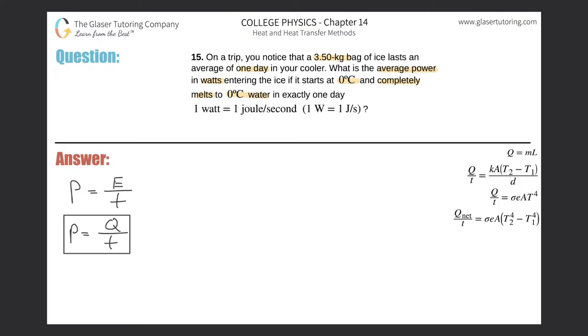They're talking about power so I write down my power formula. Next thing I'm going to notice is that they're talking about ice if it starts and completely melts to water. I'm thinking about heat transferred and we're talking about changing states - that must be the latent heat formula, where the heat energy gained or lost is equal to the mass of that particular object, or the mass that has changed phase, multiplied by the latent heat of fusion or vaporization. Fusion is solid to liquid and liquid to solid. Vaporization is gas to liquid or liquid to gas.